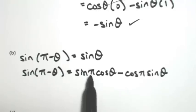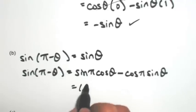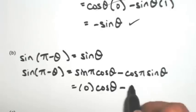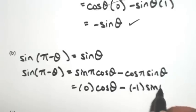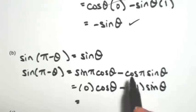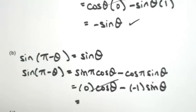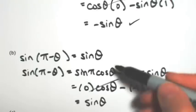And then fill in whatever we know. Sine of pi is 0, cosine of pi is negative 1. So once again, that first term just cancels. So we're left with a positive sine theta, which is exactly what I was trying to show.